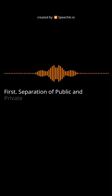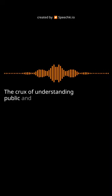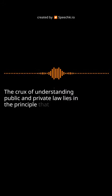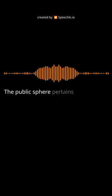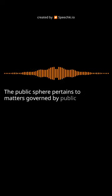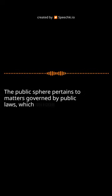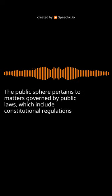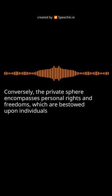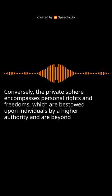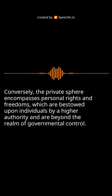Separation of public and private spheres. The crux of understanding public and private law lies in the principle that these two domains should not intermingle. The public sphere pertains to matters governed by public laws, which include constitutional regulations and government powers. Conversely, the private sphere encompasses personal rights and freedoms, which are bestowed upon individuals by a higher authority and are beyond the realm of governmental control.